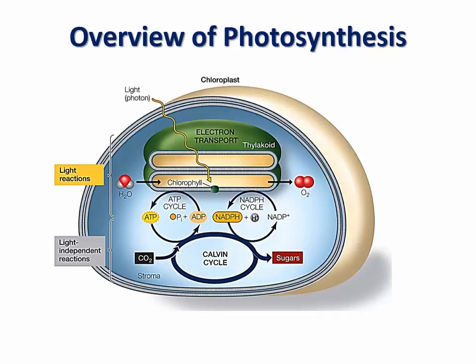Light-dependent reactions are driven by light energy captured by the green pigment chlorophyll and result in the production of ATP and the reduced electron carrier NADPH. In contrast, the light-independent reactions do not use light directly. Instead, they use the products of the light-dependent reactions — meaning ATP and NADPH — in order to convert CO2 into sugars.